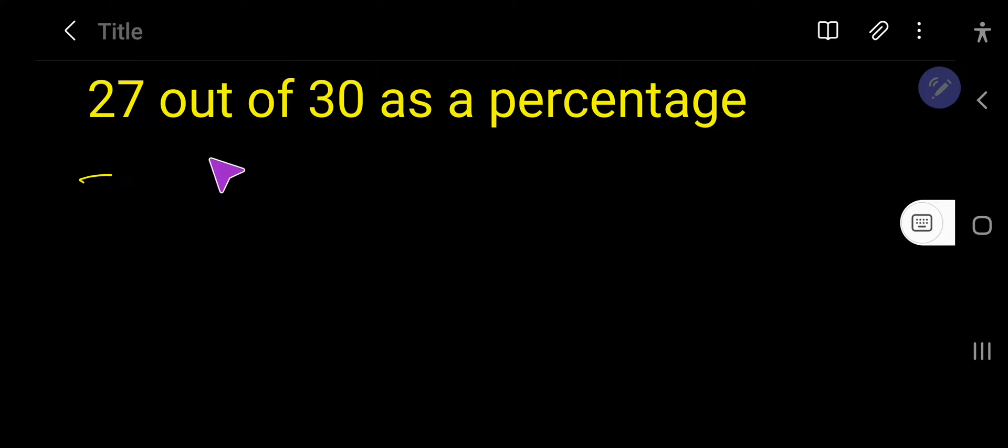Okay, let us convert this fraction to percentage. So our first number is 27 and out of—remember, out of means this fraction part—then we have 30. That is, we need to convert 27 divided by 30 as a percentage.